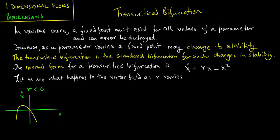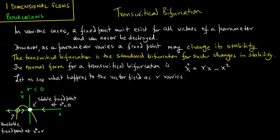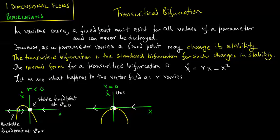From the graph of x̊ versus x, we have two fixed points: one is an unstable fixed point at x* = r, and the other is a stable fixed point at x* = 0. For r = 0, we find that we have one fixed point in the system. Note that the unstable fixed point actually approaches the origin.